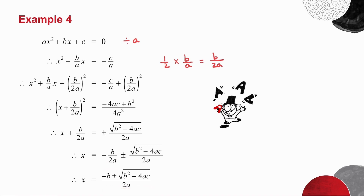And that gives you the quadratic formula. In other words, if you have any quadratic equation — ax squared plus bx plus c equals 0 — the roots of that equation, the x values, will always be x equals minus b, plus or minus the square root of b squared minus 4ac, all over 2a. Now you know where that formula comes from.